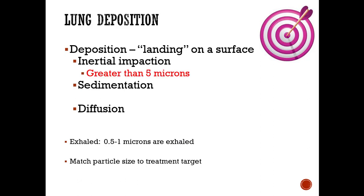Inertial impaction involves particles greater than five microns and affects your upper airways. Think of it like a large boat that can't turn quickly—a larger micron particle entering your airways has enough momentum that it impacts the wall of your upper airways and goes no further.